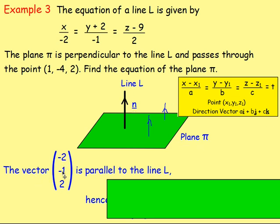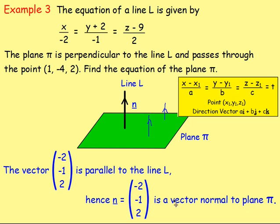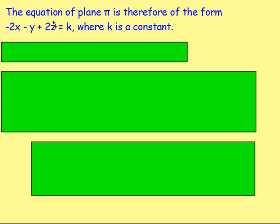The vector (negative 2, negative 1, 2) is parallel to line L, and because line L is perpendicular to plane pi, this vector is also normal to the plane. Therefore the equation of the plane will be of the form negative 2x minus 1y plus 2z equals k, taking those components from the normal vector.